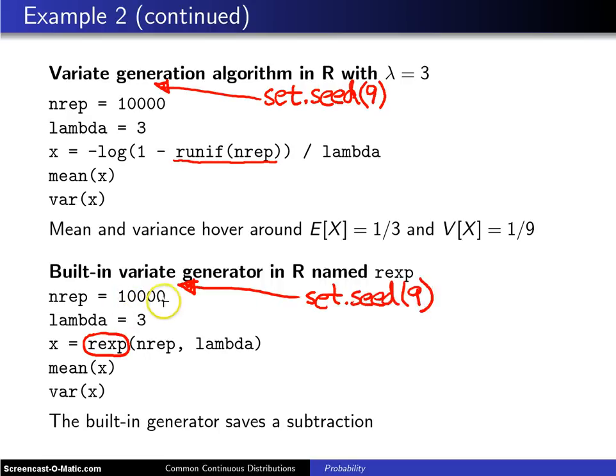again, choose 10,000 as the number of random variates to generate, set lambda to 3, same as above.